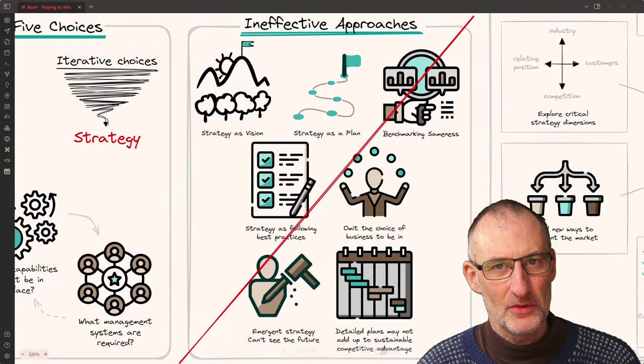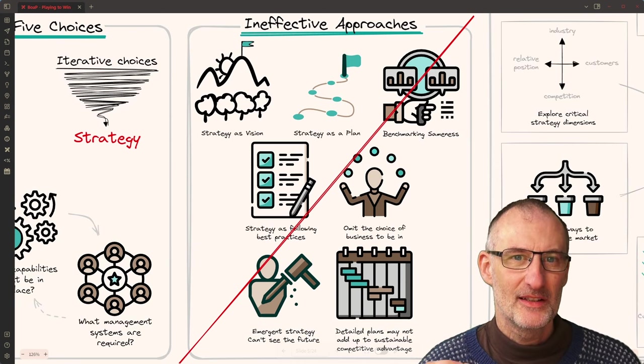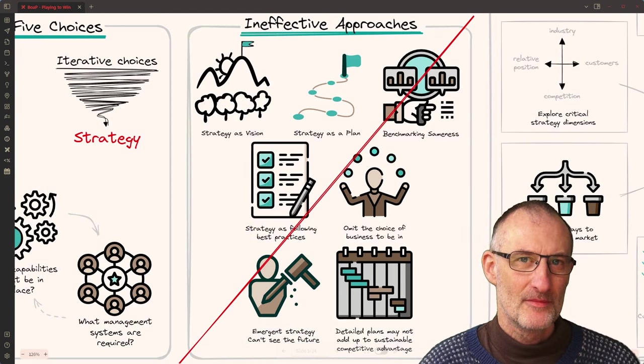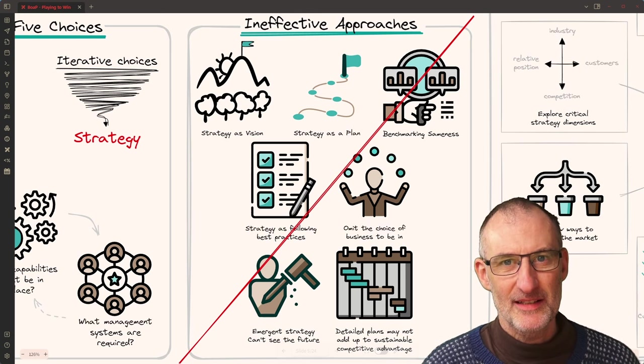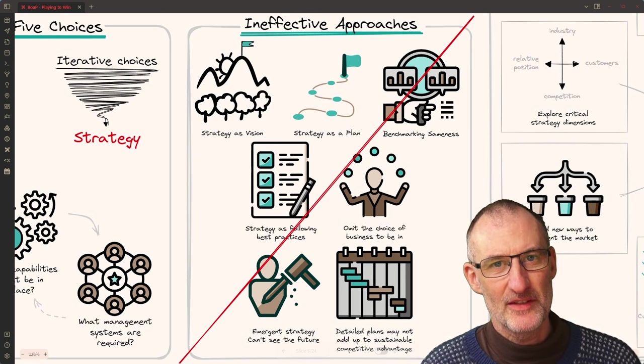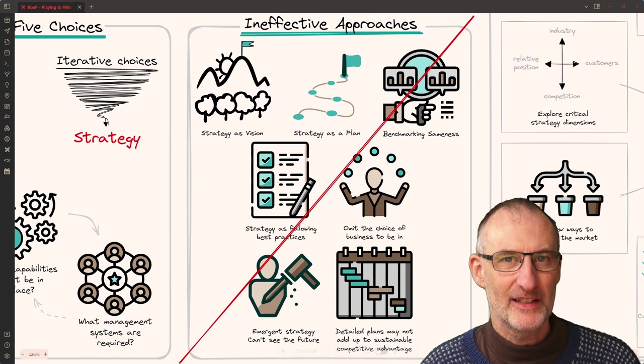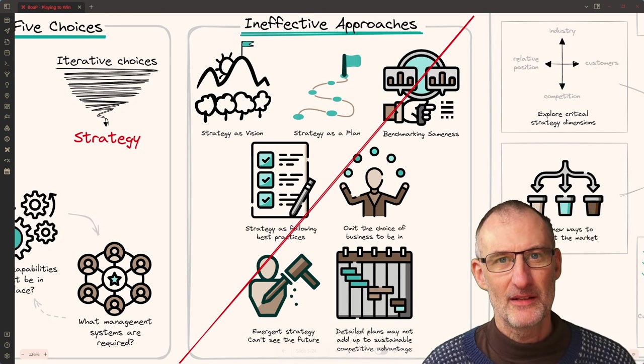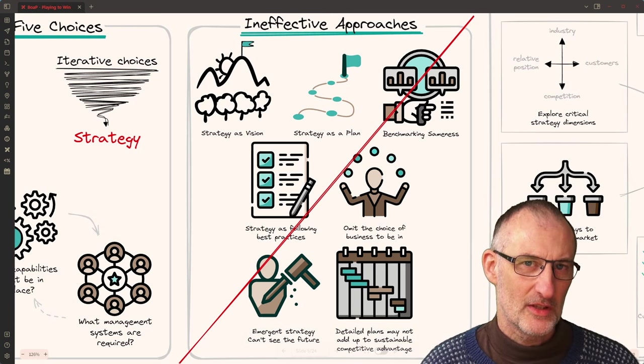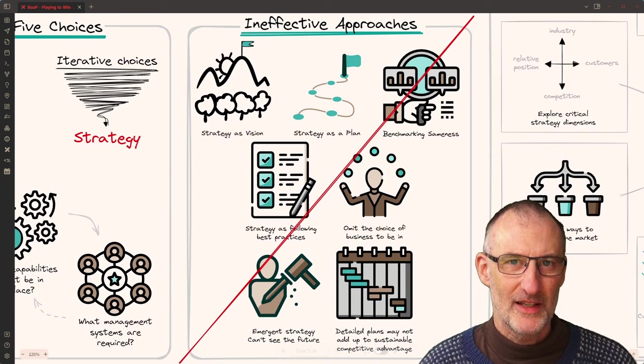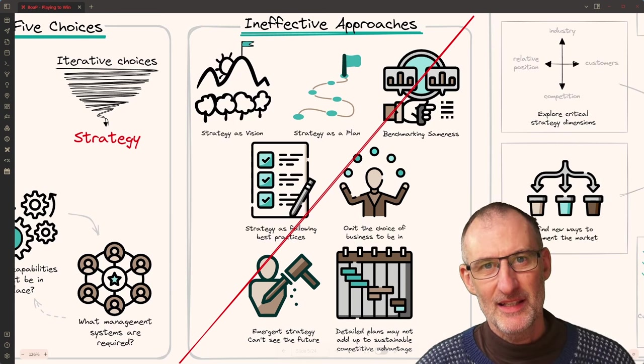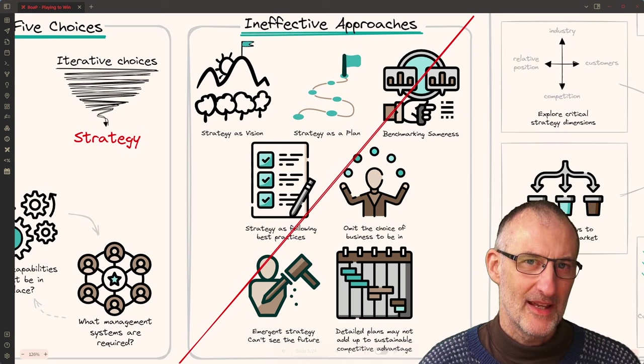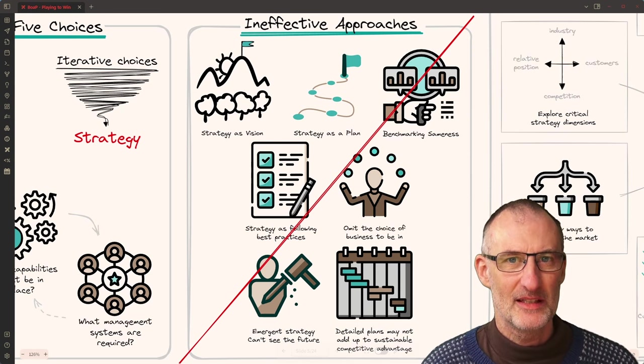Now before we dive in to what strategy is and how it works, let's talk about some of the ineffective ways and approaches to strategy. So the first ineffective approach is treating strategy as a vision or stopping at the vision level. A vision is not yet a strategy. It's an important part of the strategy but it's not the strategy alone. Equally people talk about strategic plans which according to Roger is really not a good term. A plan is not a strategy. A detailed plan may actually not add up to a long-term sustainable competitive advantage.